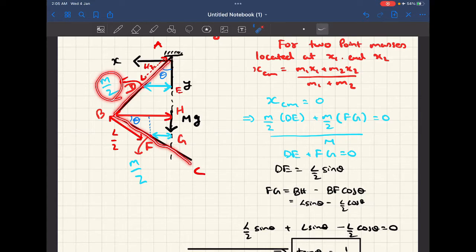It will be m by 2 because these two rods are of the same length, which means they have the same mass. The total mass of the system I've assumed to be m, which means this mass should be m by 2, and I have kept it at the center of mass of AB.